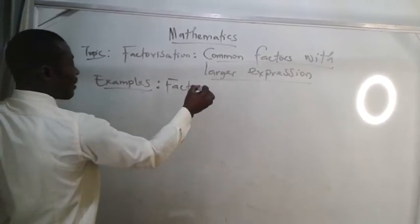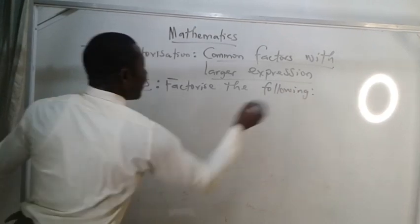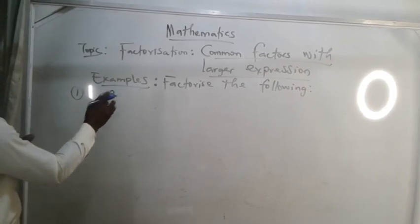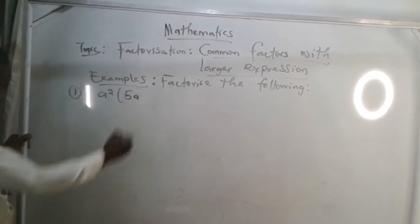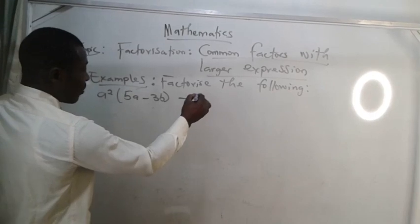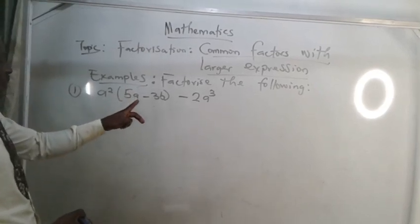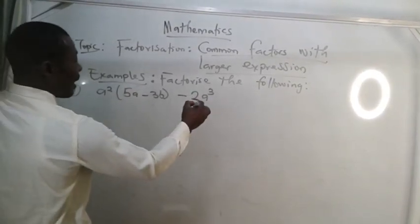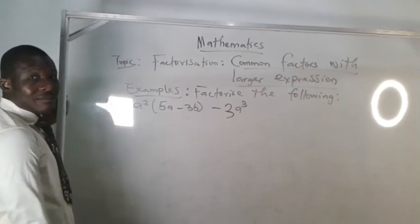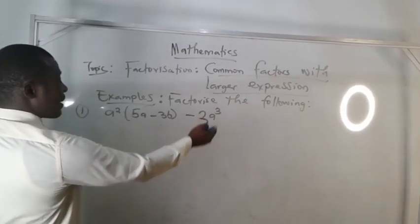Factorize the following. Number one: a squared into five a minus three b, minus three a raised to the power three — that is, a cubed. So the expression is a squared into five a minus three b, minus three a cubed.